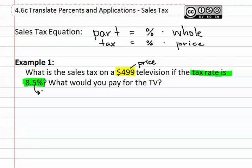It wants to know what the sales tax would be, or the part. Let's start with this question first. We know that our equation is tax or part equals percent times whole or price. This means that we can write: tax, the part we do not know, equals percent or 8.5 divided by 100 times 499.